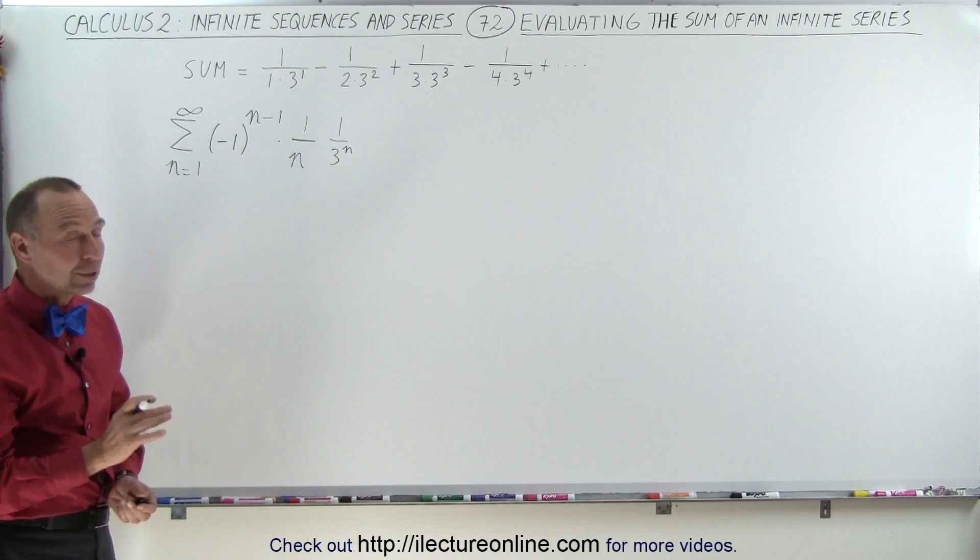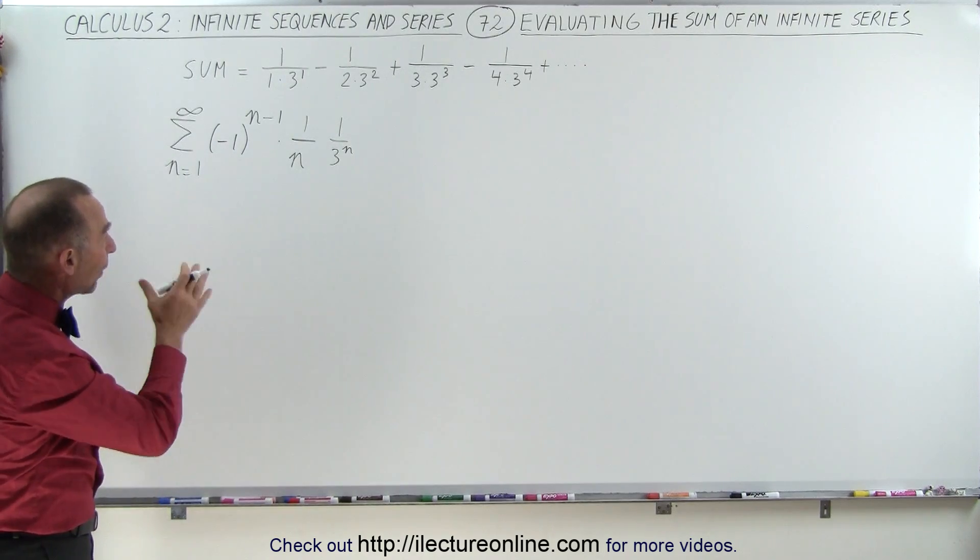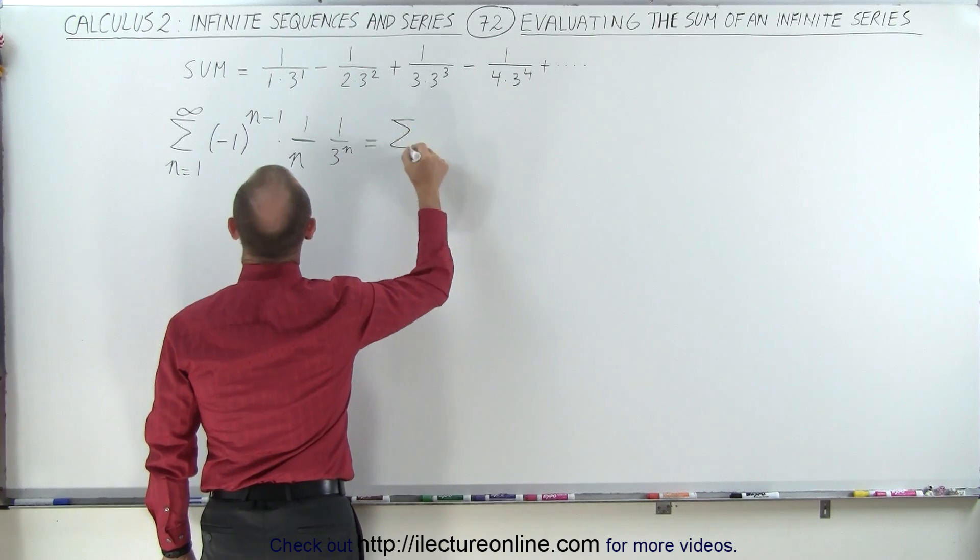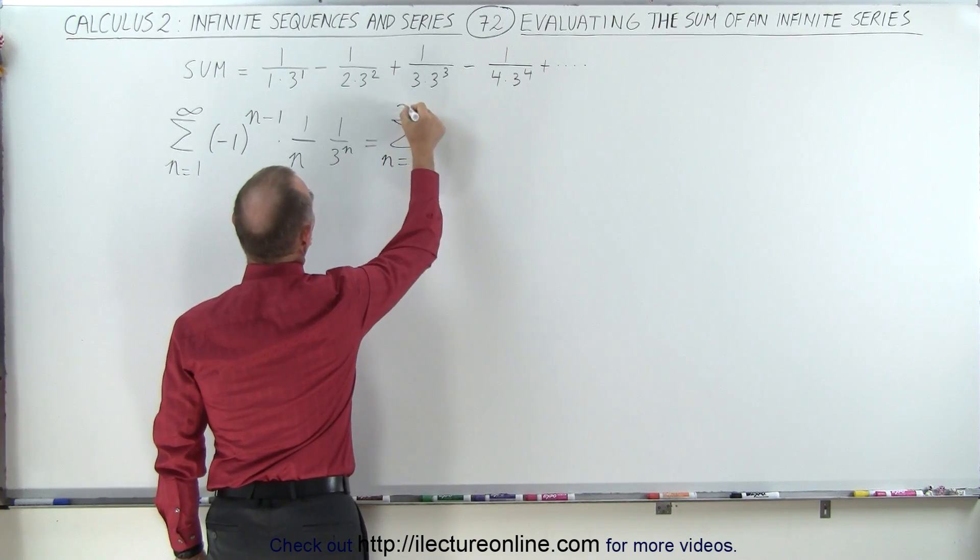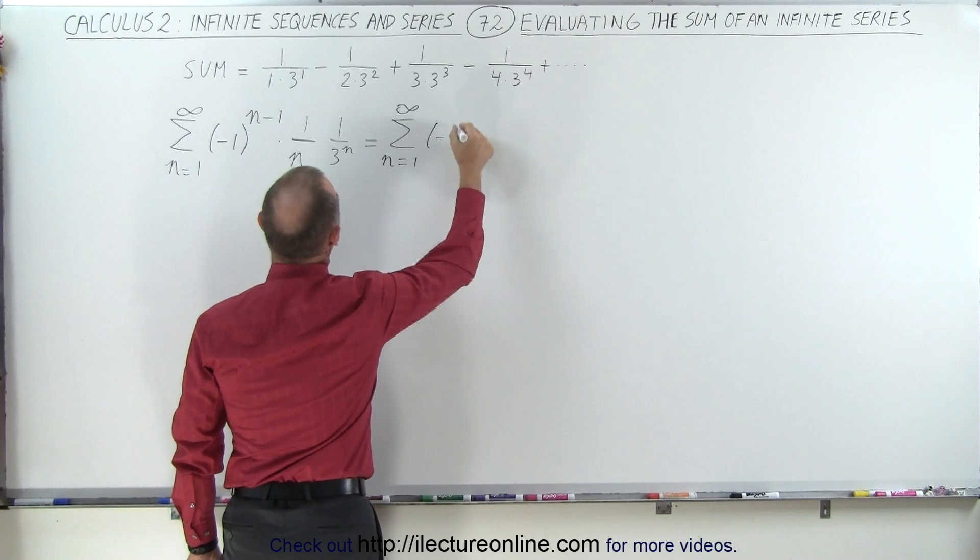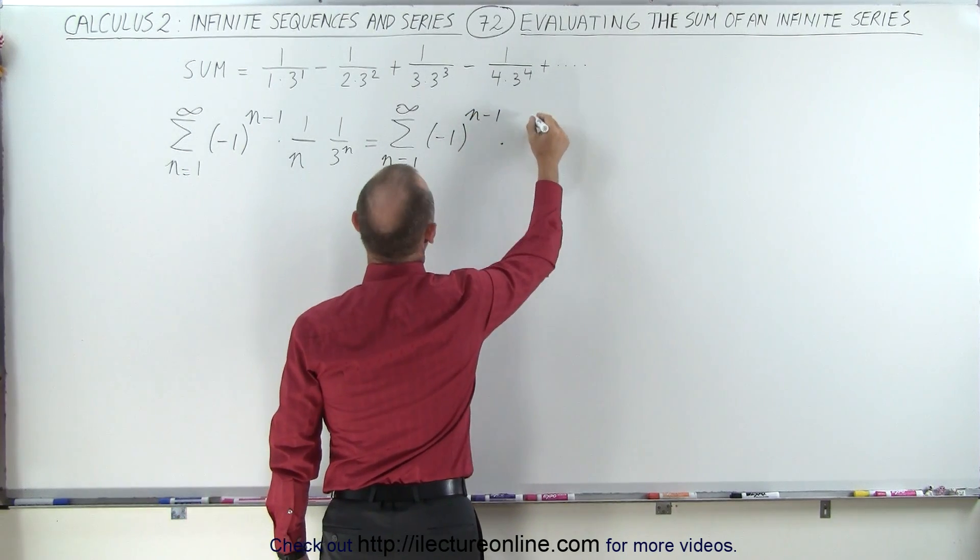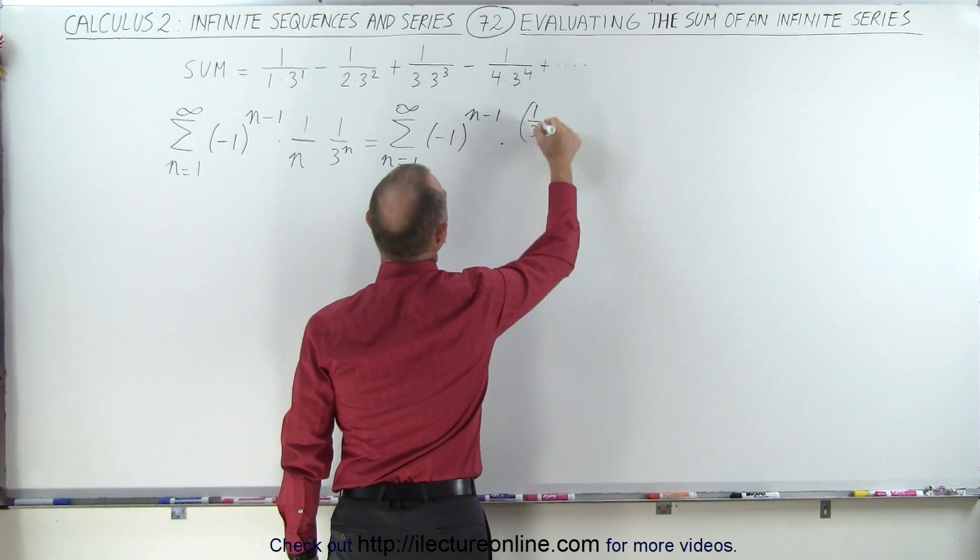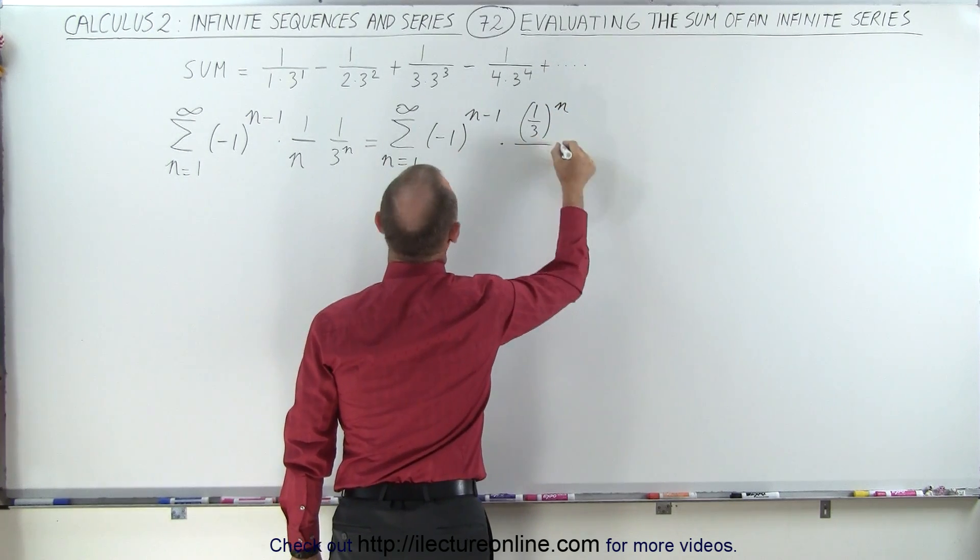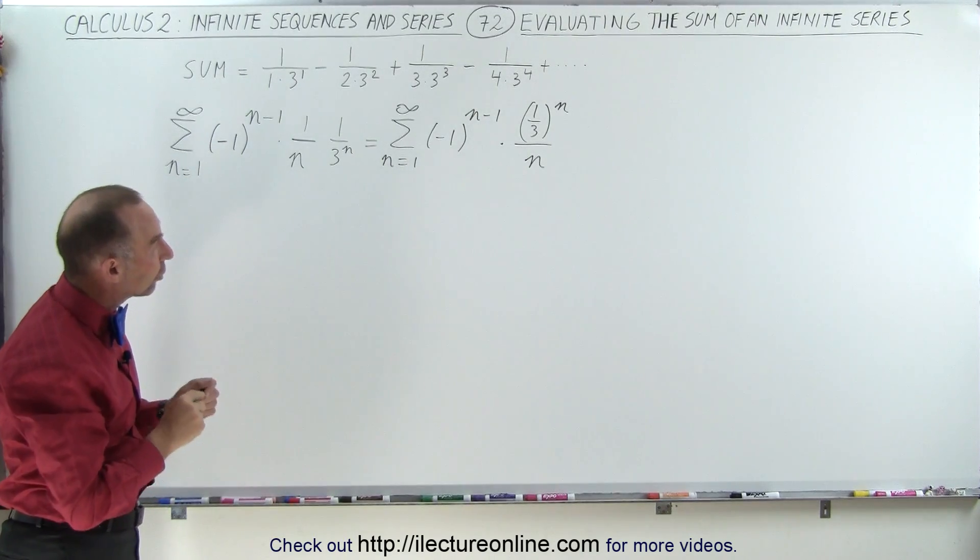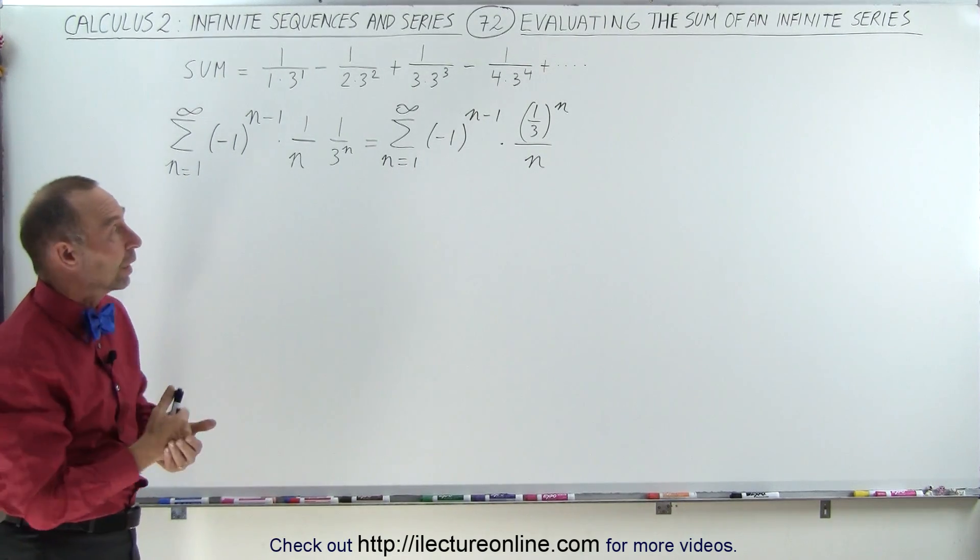Now we're looking better. Now I'm going to write this a little bit different. I'm going to write this as the infinite sum from n equals 1 to infinity of minus 1 to the n minus 1 times 1 over 3 to the n power divided by n. Now the reason why I wanted to write it like that, because that begins to look a lot like something we're familiar with.